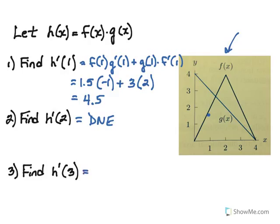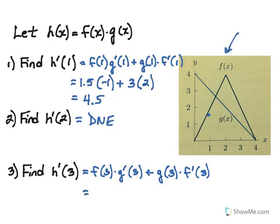Let's find h prime of 3. It will be f of 3 times g prime of 3, plus g of 3 times f prime of 3. Estimating from the graph: f of 3 looks to be about 2, g prime of 3 is negative 1 anywhere along that line, g of 3 looks to be about 1, and f prime of 3 on the right side of the v should be negative 2 since the left side was positive 2. Simplifying, we get negative 4.